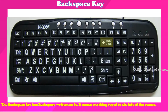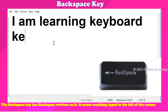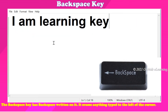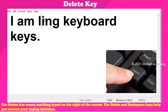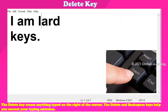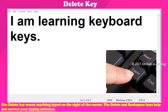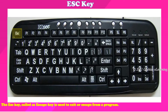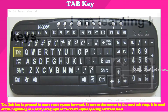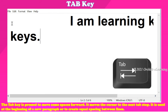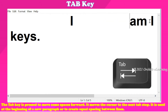The Backspace key has 'Backspace' written on it. It erases anything typed to the left of the cursor. The Delete key erases anything typed to the right of the cursor. The Delete and Backspace keys help you correct your typing mistakes. The Escape key is used to exit or escape from a program. The Tab key is pressed to move some spaces forward — it moves the cursor to the next tab stop, and is used at the beginning of a new paragraph or to create equal spacing between lines.